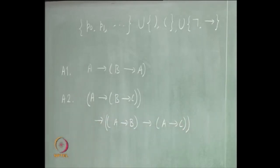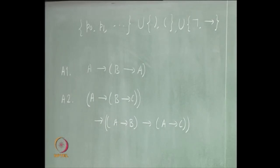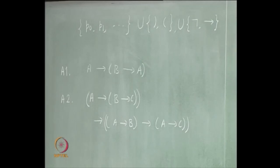Axiom 2 is again known as distribution of implication. But slowly we are not going back to the semantics. So we forget whether they are laws or not. It is only for reference that yes, they were laws.